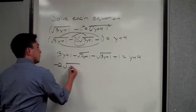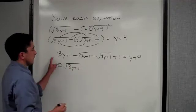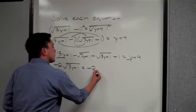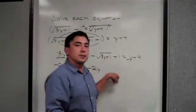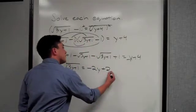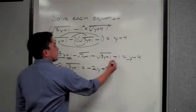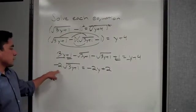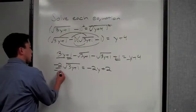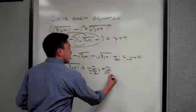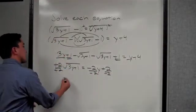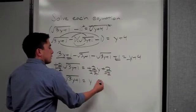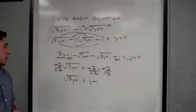Combining the two negative root terms gives negative 2√(3y+1). Moving the 3y to the right gives negative 2y, and 1 plus 1 is 2, but we subtract it to move it over, giving positive 2. So we have negative 2√(3y+1) equals negative 2y plus 2. Now isolate the root by dividing everything by negative 2, leaving √(3y+1) equals y minus 1.